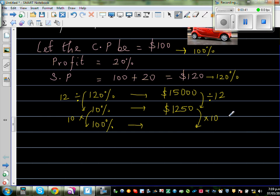So you do the same thing here, so times it by 10. So we have to put a zero, which is $12,500. So the cost price of the car is $12,500.